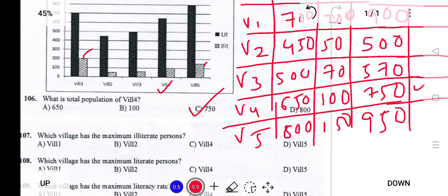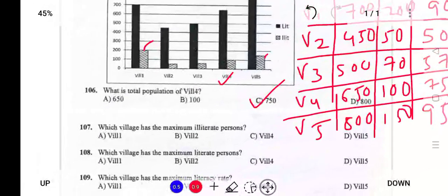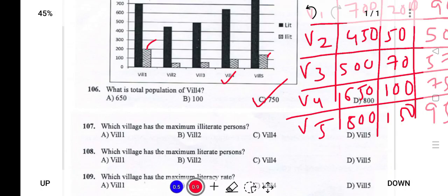Next question: Which village has the maximum illiterate persons? Looking at all five villages, Village 1 has 200 illiterate persons, which is the highest compared to Village 2, 3, 4, and 5. So the answer is Village 1, which is option A.